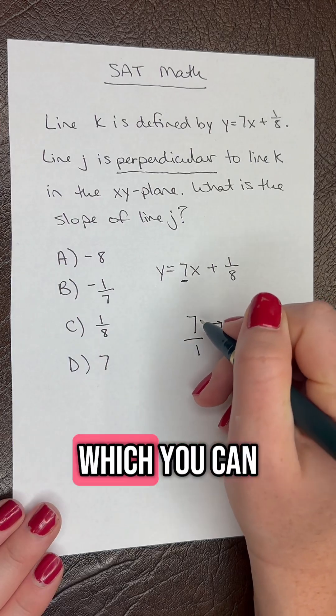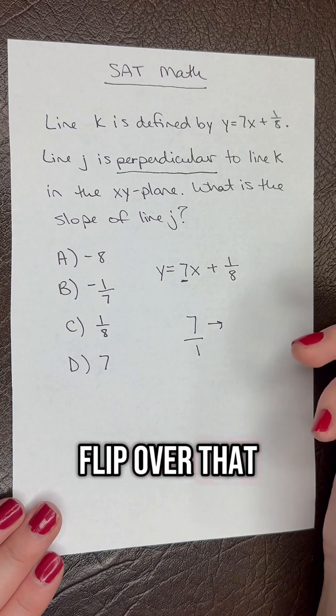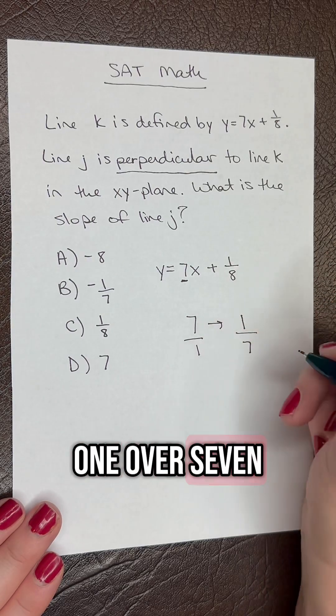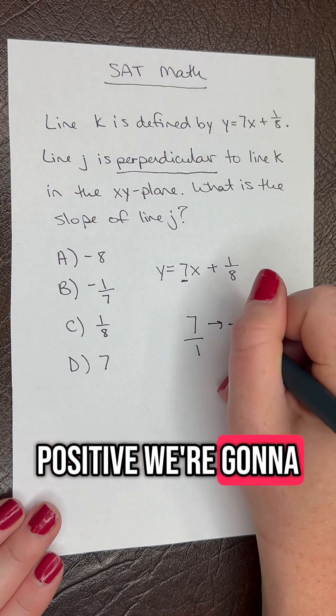So that means you take this number which you can think about as 7 over 1. You're going to flip over that fraction so that'll give you 1 over 7, and then you're going to change the sign. So instead of positive, we're going to say negative.